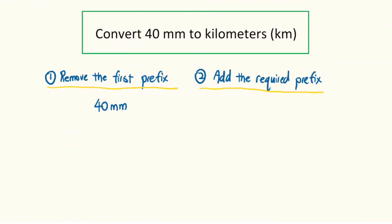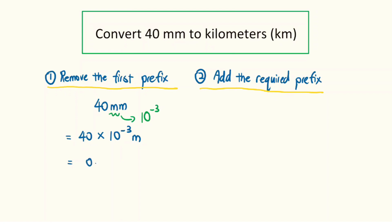Next, we will convert 40 millimeters to kilometers. First, we will remove the prefix from millimeters, which is 'milli'. It has a value of 10 to the power of minus 3. To remove it, we multiply 40 by the value of the prefix, which is 10 to the power of minus 3, and we get 0.040 meters.